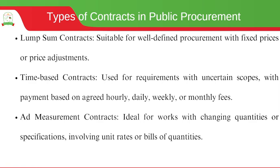In public procurement we have several contract types. Lump sum contracts are suitable for well-defined procurement with fixed prices or price adjustments; examples include construction projects and maintenance contracts such as road maintenance. Time-based contracts are used with uncertain scopes, with payment based on an agreed hourly, daily, or weekly rate.